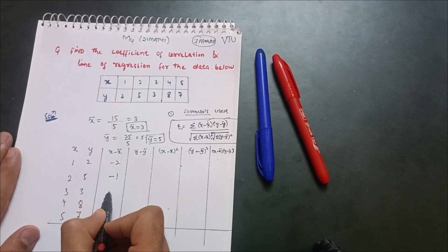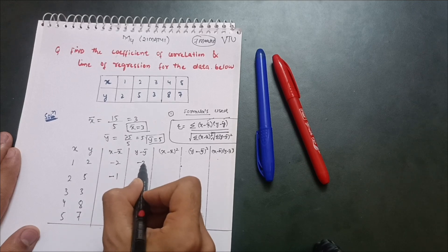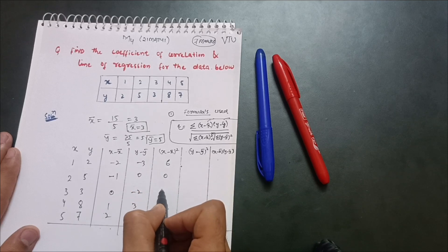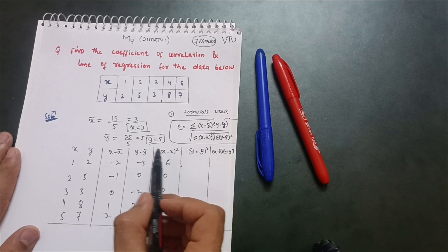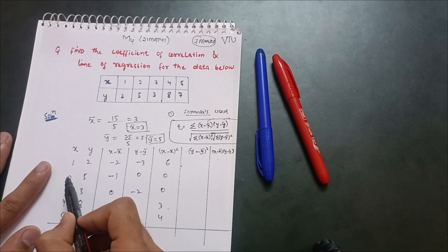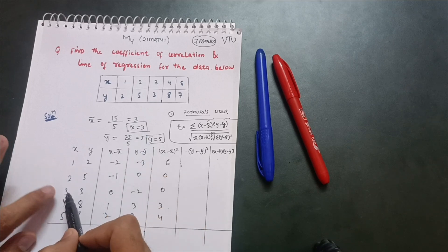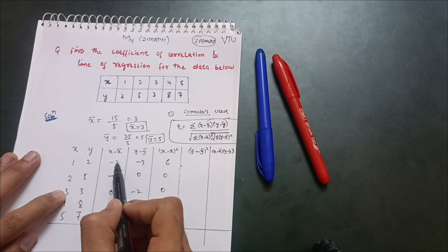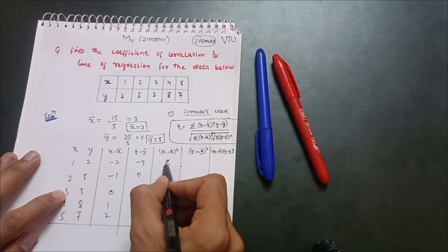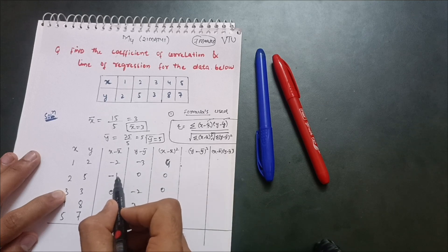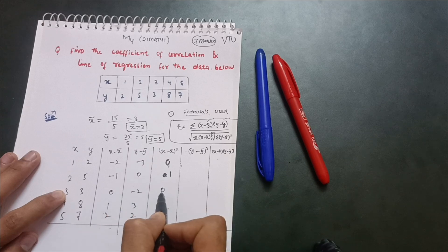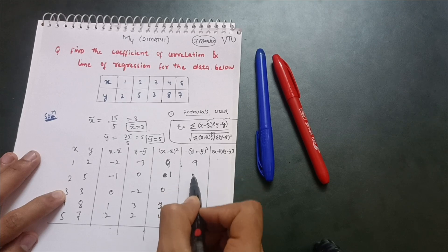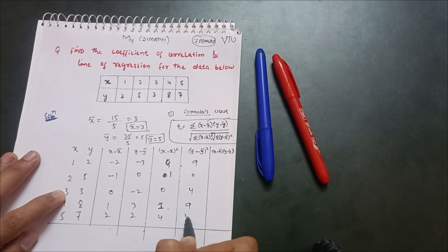For y minus ȳ: −3, 0, −2, 3, 2. The (x minus x̄)² values are: (−2)²=4, (−1)²=1, 0²=0, 1²=1, 2²=4. The (y minus ȳ)² values are: 9, 0, 4, 9, 4.